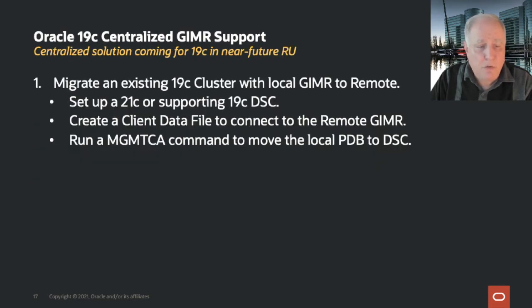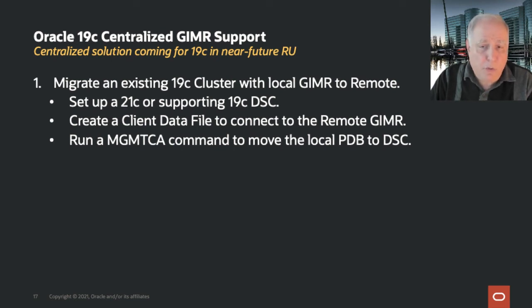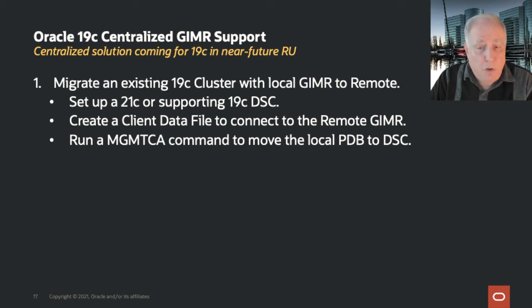To make use of this in 19c, we will be introducing an RU in the near future that supports two paths. The first: if you already have a local GIMR, you can turn it into a remote one by installing a DSC — either a 21c or a compatible 19c DSC — then create a client data file to connect to the remote GIMR. You then run an MGMT CA command to move your local PDB to the DSC. You won't lose any data, and all clients will immediately talk to this remote service.